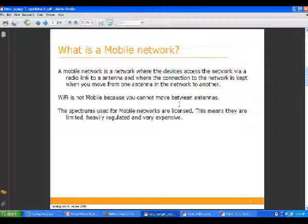The definition of a mobile network is that you have devices where access is via a radio link to an antenna, and where you can keep the connection even though you move from one antenna to another. That's why Wi-Fi, in this brief overview, is not a mobile network. Another thing to be aware of is that the spectrum — the frequencies — used for mobile systems are licensed. An operator has to pay for a license. They're limited, heavily regulated, and very expensive, which gives us a lot of demands on the technology used.